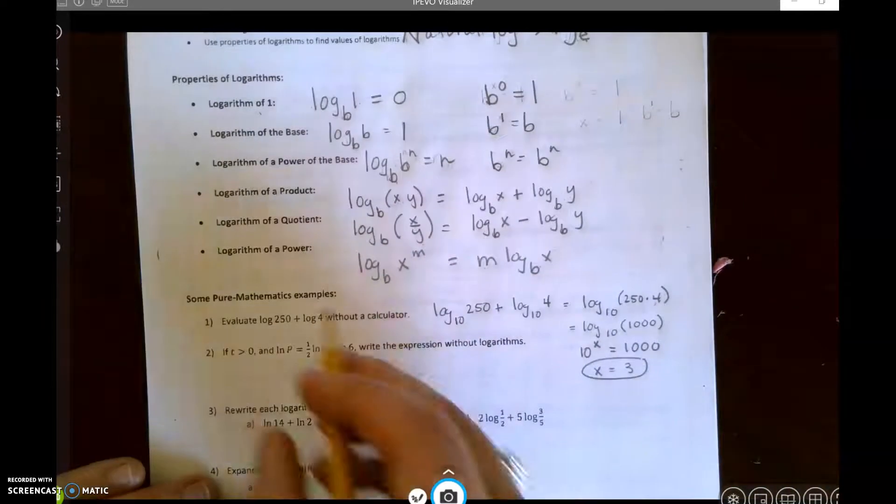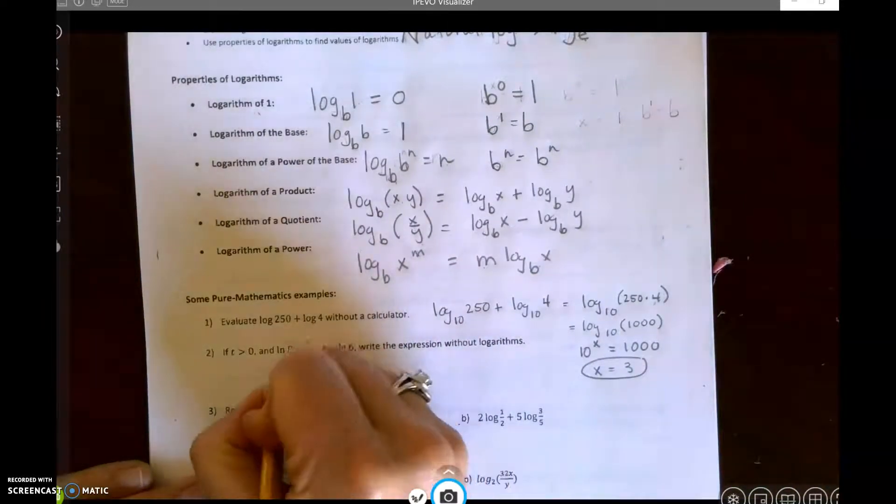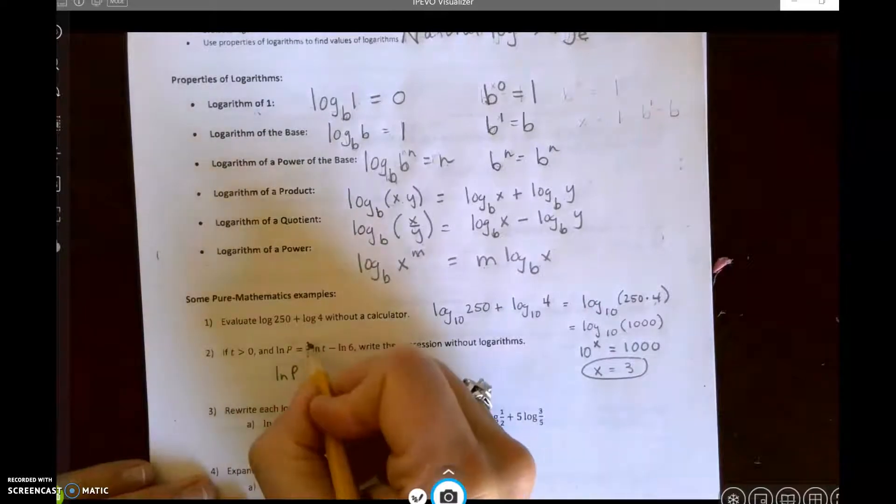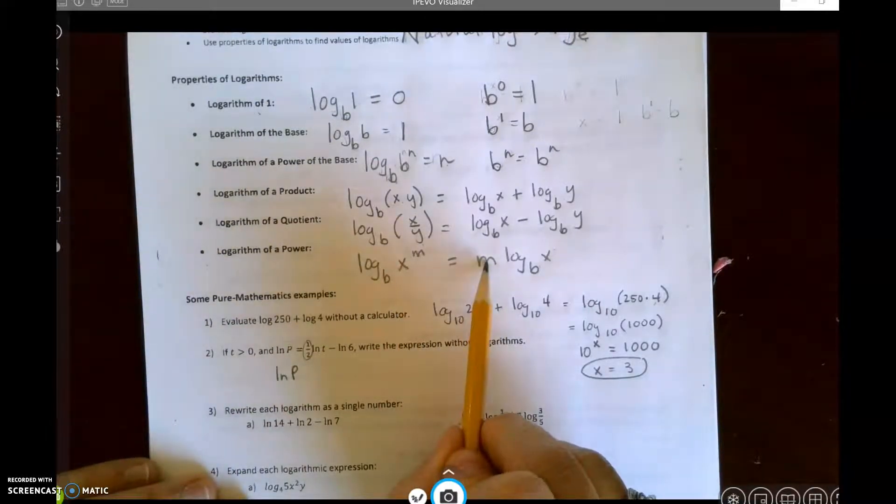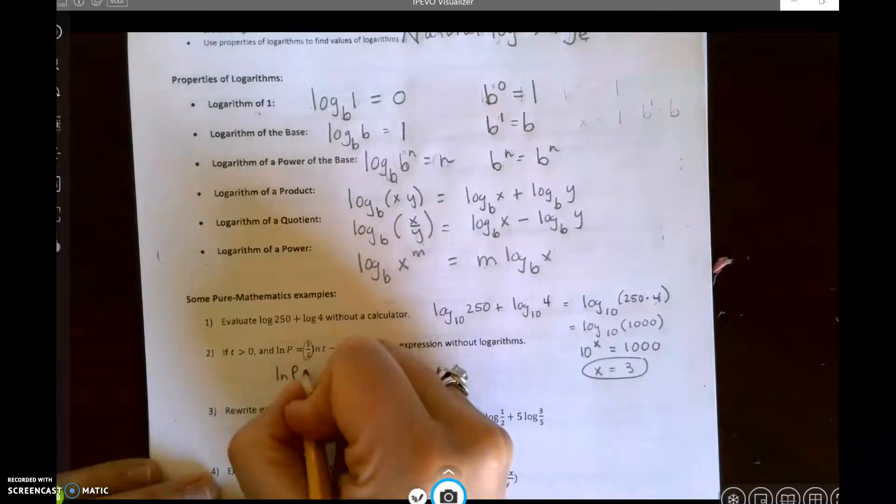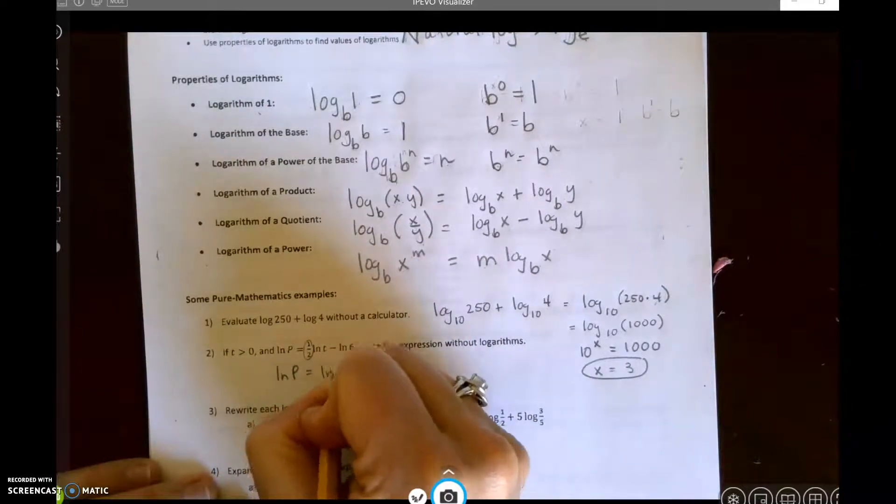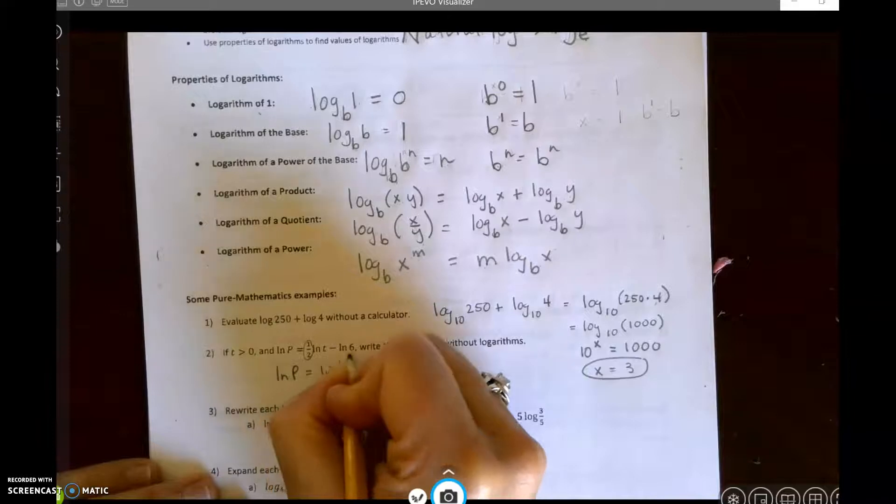All right, so I can't really do anything here, so I've got the natural log of t. This multiplier, notice when I have a multiplier, I can move it up to the exponent.